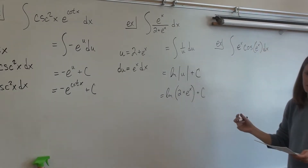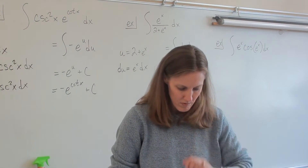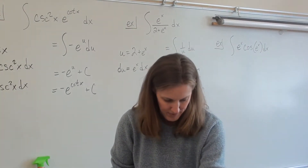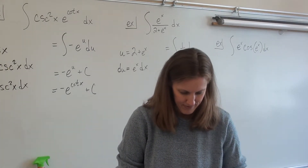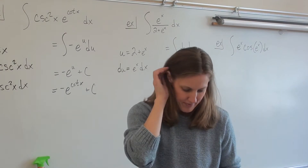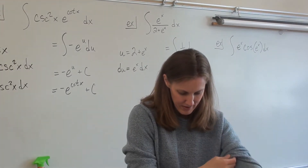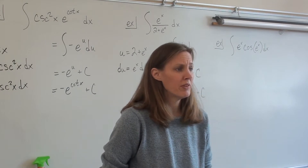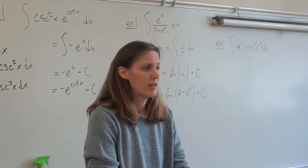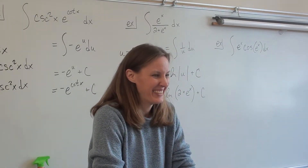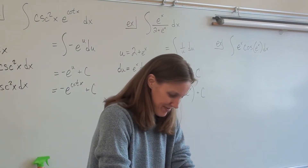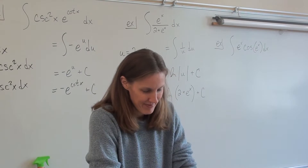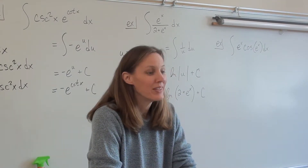That's tricky. U is e to the x — because the argument of the cosine is not just x, there's something more than just x. U equals e to the x because your argument is different.